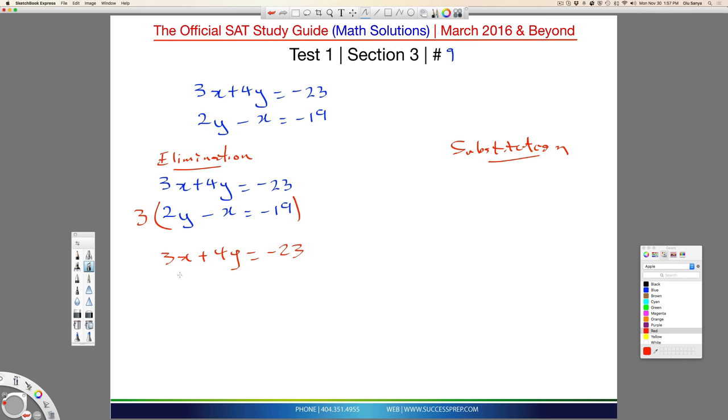But this bottom is now, actually, I'm going to switch it around so that the x's are right under each other. So, this 3 times minus x is now minus 3x here. This 3 times 2y is plus 6y. And this 3 times 19 is going to give us 57, negative 57 there.